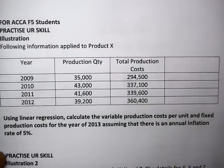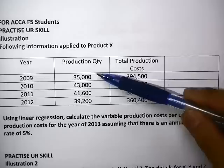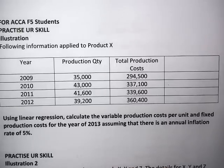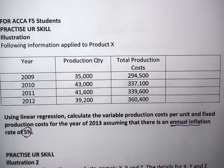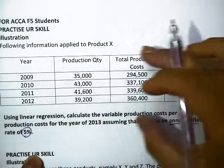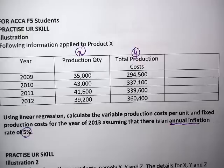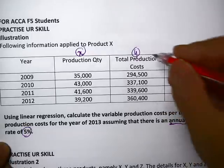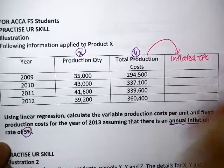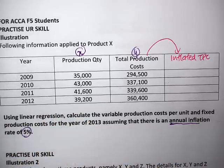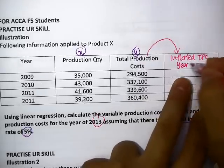Now if you look at this example we have here, they've given you production quantity and the TPC for all the four years. And they want us to calculate the variable cost per unit and the fixed production cost for 2013, assuming there's an annual inflation of 5%. So what you're going to do is take all the costs here, your x value and your y value. But the catch here is before you do the calculation, because there will be an inflation effect, you will have to adjust this. So you need to have an inflated TPC.